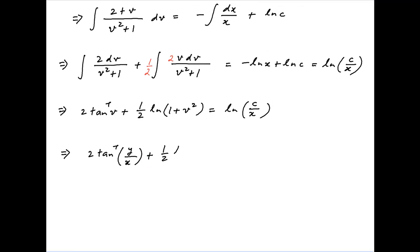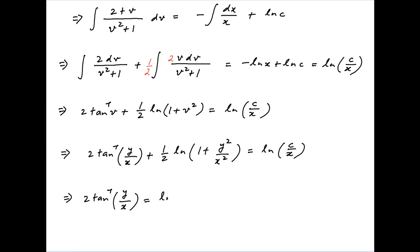Replacing v with y upon x we get 2 times tan inverse y upon x plus half of ln of 1 plus y squared upon x squared is equal to ln of c upon x.